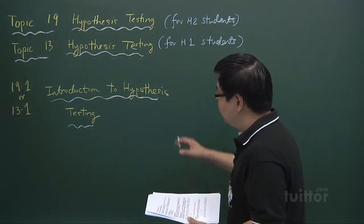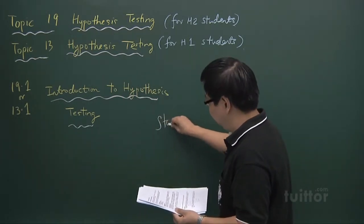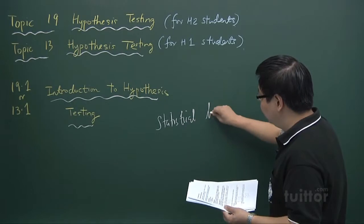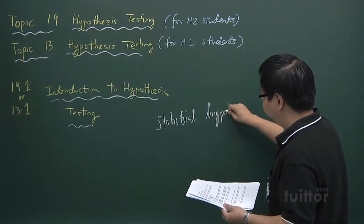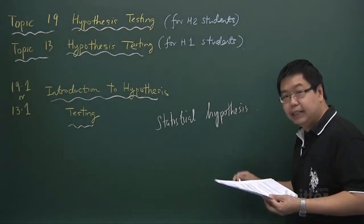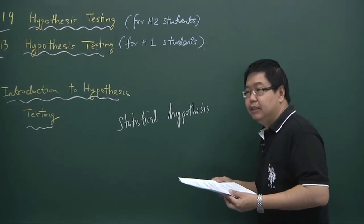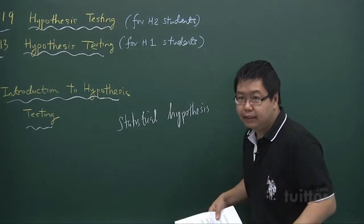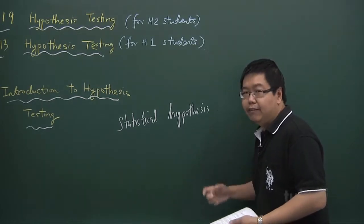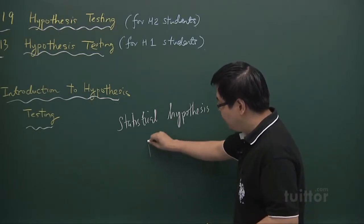Before we go into Hypothesis Testing, we need to know this thing called Statistical Hypothesis. That is a hypothesis that statisticians usually write down before they do any research. The statistical hypothesis is basically an assumption, claim, or statement concerning the population mean. It can concern other things like population variance, but in our A-level syllabus, we will only be focusing on testing of hypothesis involving the population mean.